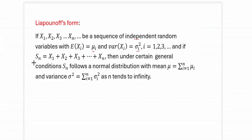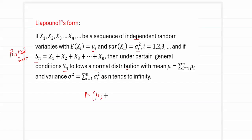If we consider Sn, called the partial sum — the sum of the first n variables x1 plus x2 plus x3 up to xn — then under certain general conditions, this partial sum Sn follows a normal distribution when the number of variables is large. Normal distribution has two parameters: mean and standard deviation sigma.